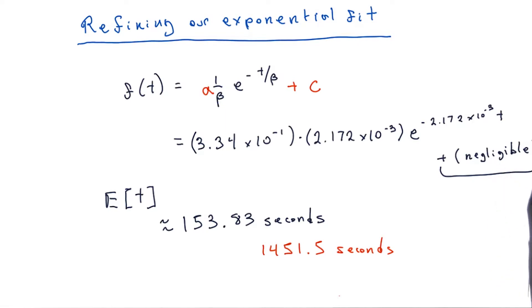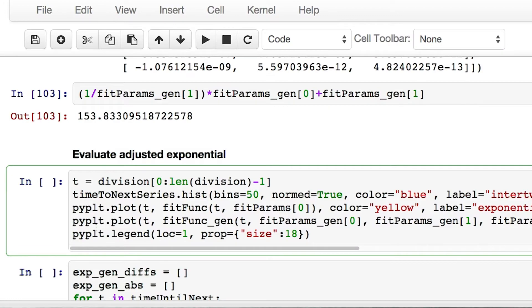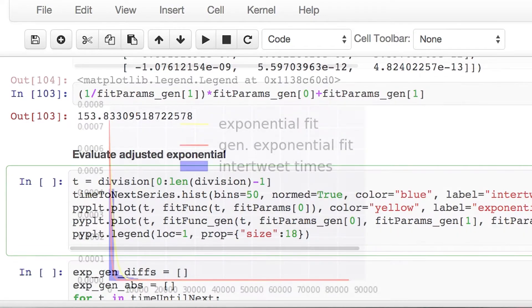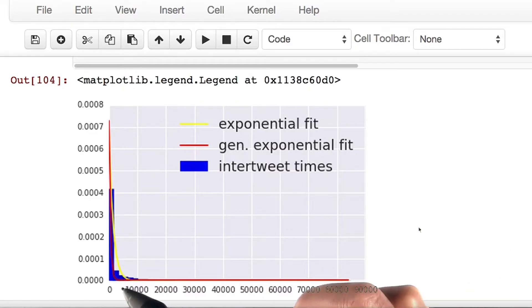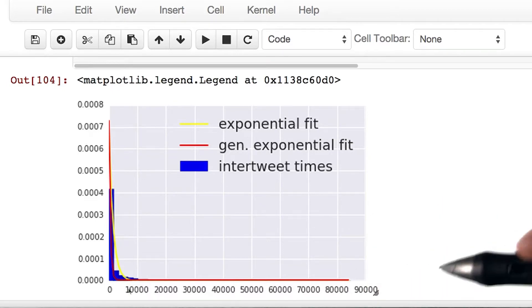Now, let's see how well this new guess of 153.83 seconds works out. So first things first, let's evaluate our adjusted histogram. Just as before, the blue indicates the original intertweet times, and the yellow is the initial exponential fit that we did. To that graph, we've added the red, which is the generalized exponential fit using the a and c parameters. You can see that it's a little bit of a tighter fit, just sort of qualitatively.